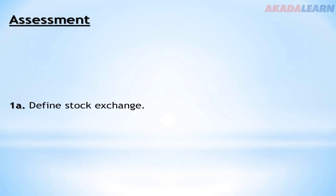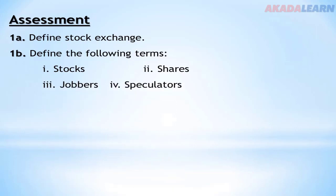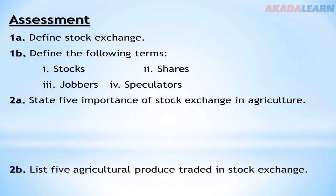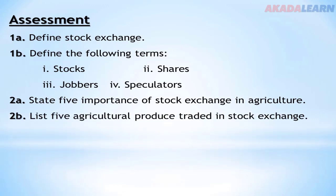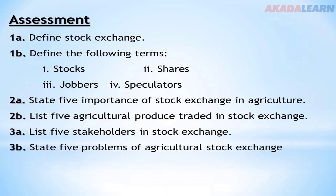For today's assessment: question one (a) define stock exchange; question one (b) define the following terms — stocks, shares, jobbers, and speculators. Question two: state five importance of stock exchange in agriculture. Question two (a): list five agricultural produce traded in stock exchange. Question three (a): list five stakeholders in stock exchange. Question three (b): state five problems of agricultural stock exchange. If you can't answer these questions, go back to the video, study it again, and you'll be able to answer them. It's wonderful to have you on this platform again. Have a great day, thank you.